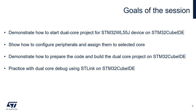We will start with configuration of the peripherals and assigning them to both cores, so Cortex-M4 and Cortex-M0+. After this, we will generate simple projects for both cores and I will demonstrate how to prepare the code and how to build it for dual-core architecture with STM32 Cube IDE. We will then configure and run a dual-core debug session using STLINK and STM32 Cube IDE as well.